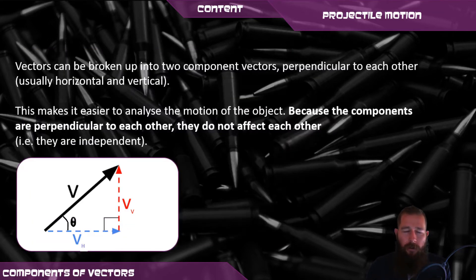Vectors can be broken up into components that are perpendicular to each other. So this is very beneficial when we're analyzing motion, as the perpendicular components are independent of each other, meaning they don't influence each other. So with motion, we tend to break it up into horizontal and vertical, and then that way it's easier to analyze that motion.